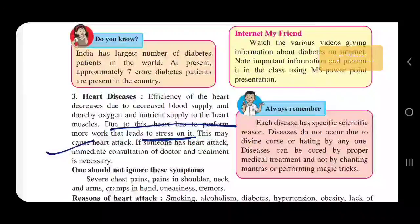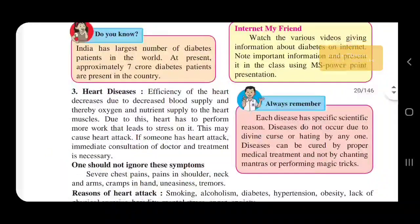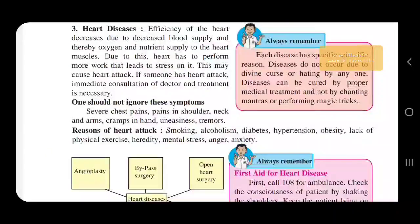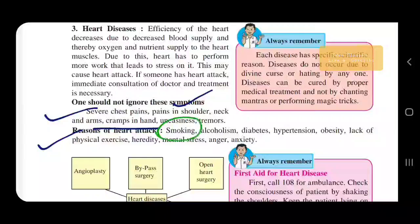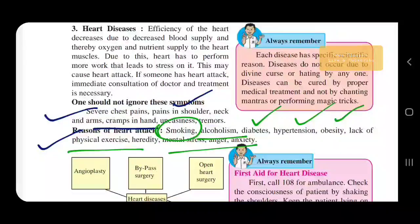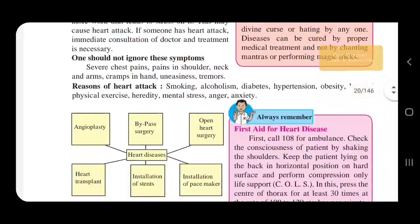Symptoms of a heart attack that one should not ignore include severe chest pain, pain in the shoulder, neck, and arms, cramp in the hand, uneasiness, and tremor. Reasons behind a heart attack include smoking, alcoholism, diabetes, hypertension, obesity, lack of physical exercise, and heredity.